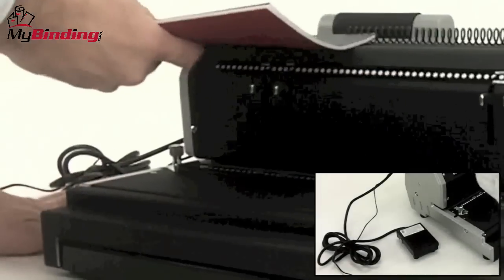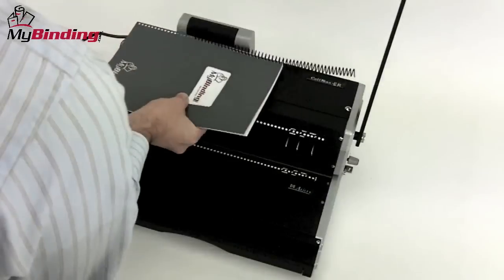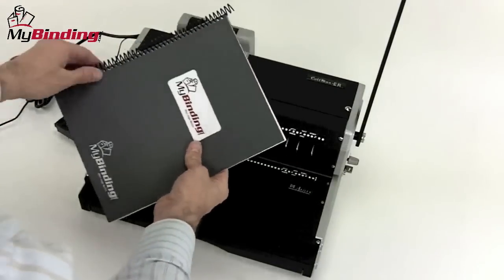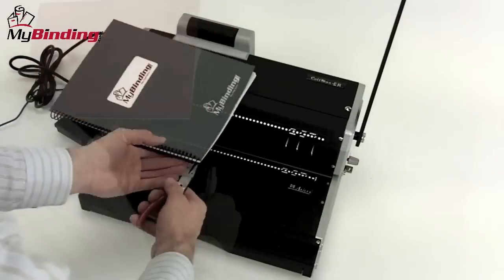Then depress the pedal and place the coil up against the rubber wheel. If you operate the pedal with your foot, then you can have both hands free to work with your project. Spin the coil all the way through the spine and crimp the ends with crimping pliers.